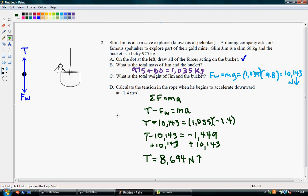And if we think about that really quick, if these objects were in equilibrium, if Jim and the bucket were not moving up or down or accelerating, then the tension would actually be equal and opposite to the force of weight. But they're moving downwards.